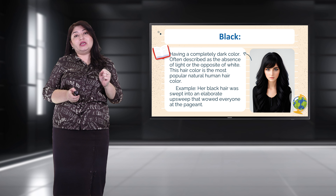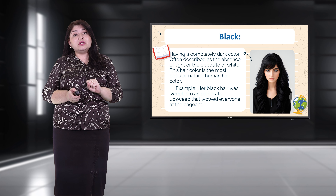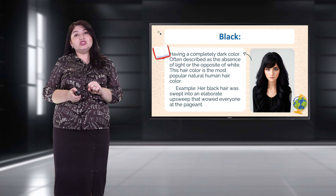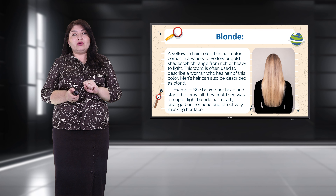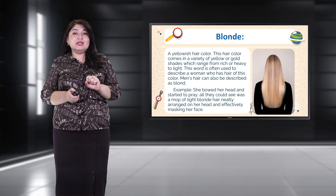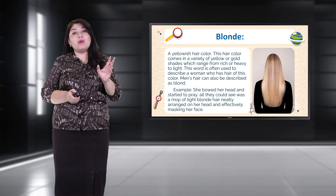Black — having completely dark hair, often described as the absence of light or the opposite of white. This hair color is the most popular natural human hair color. Example: 'Her black hair was swept into an elaborate upswept style that wowed everyone at the pageant.' Blonde — a yellowish hair color that comes in a variety of yellow or gold shades ranging from rich to light. Example: 'She bowed her head and started to pray; all they could see was a mop of light blonde hair neatly arranged on her head.'